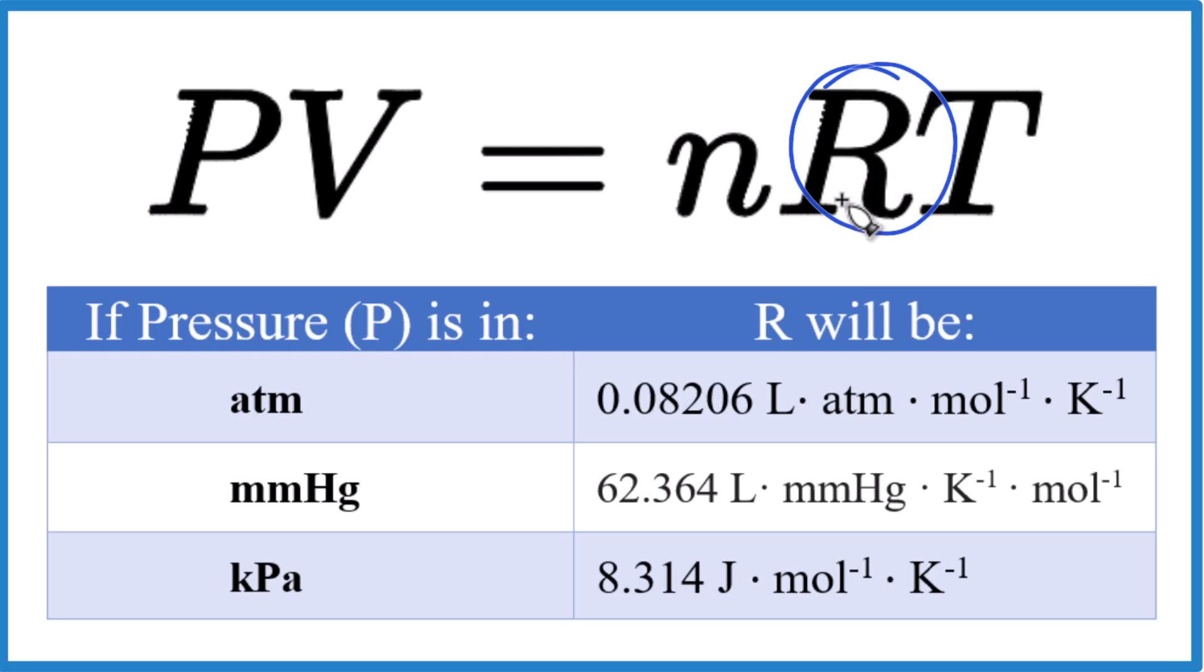R is a constant, and what it does is it helps all of the units cancel out at the end. So if you're looking for volume, you'll only end up with liters. Or if you're looking for temperature, you'll only end up with Kelvin degrees. So when we look at R, we see all of these units at the end.